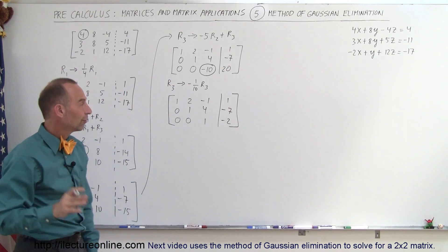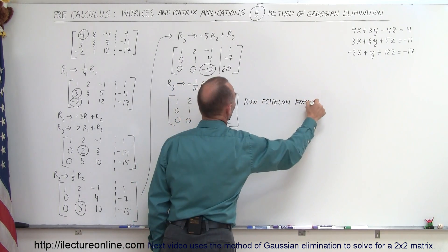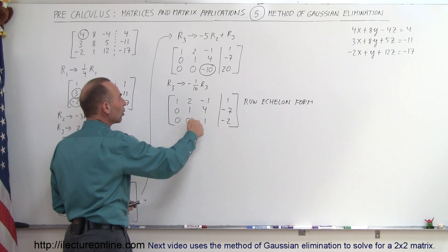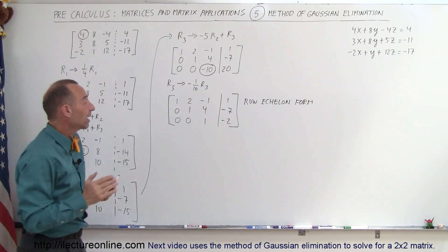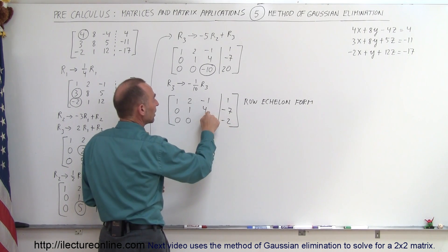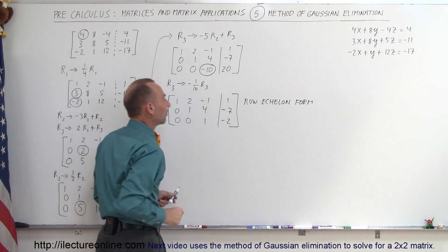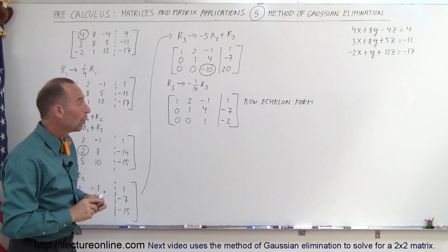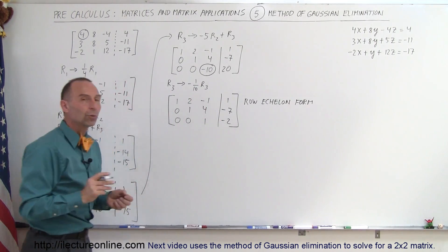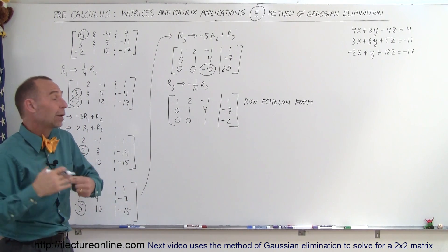At this point I have reached the row echelon form, which requires 1s across the diagonal and 0s in the lower-left corner. I can now read out that z equals negative 2, then back-substitute to find y, and then x. However, we can also continue and turn the remaining off-diagonal entries into 0s to reach the reduced row echelon form, which I prefer.